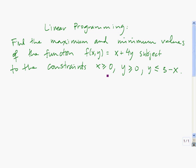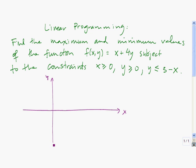Let's start with x is greater than or equal to zero. x is greater than or equal to zero means that x can either be equal to zero, which is the y-axis, or x can be greater. So that's going to be all of this region over here.